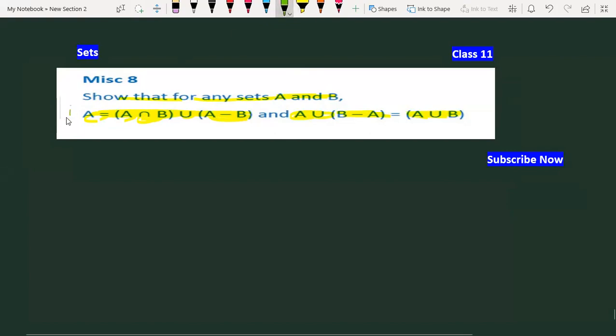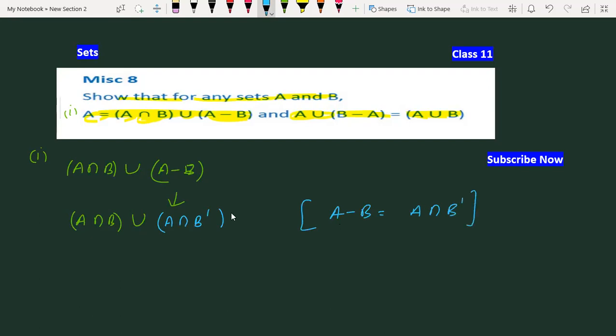A ∩ B union A - B. Here we can see A ∩ B complement, because A minus B means A and not B, A but not B.